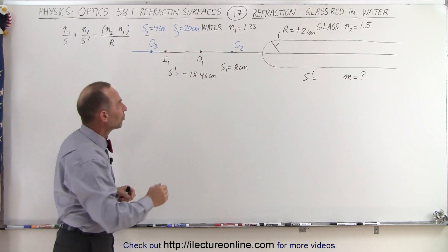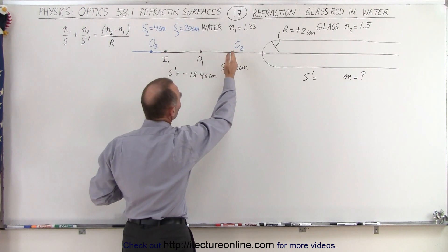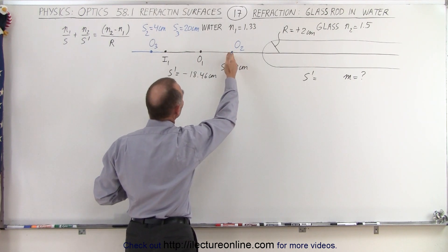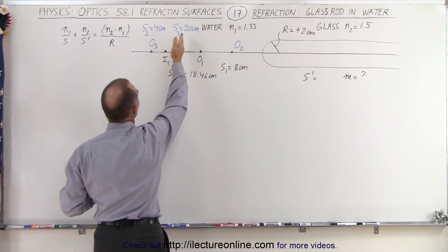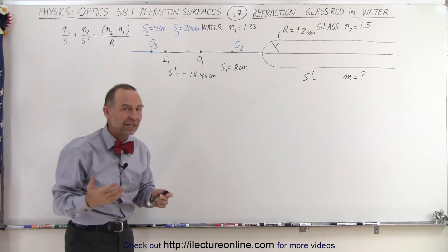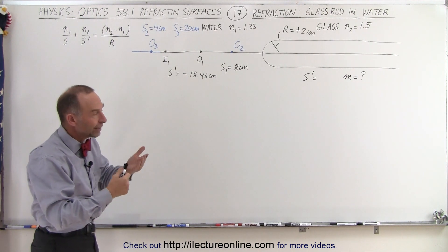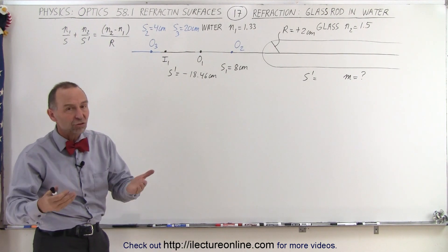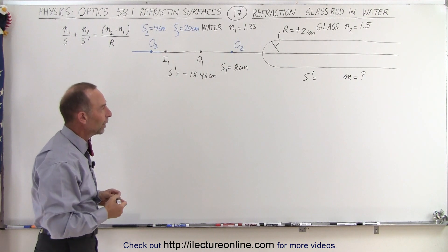What we're going to do now is put a second object at a distance of 4 centimeters and a third object at a distance of 20 centimeters to see what will happen in each case. We will also calculate the magnification so we can see how that works as well.